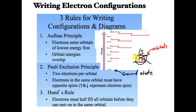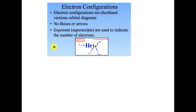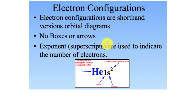What we're going to do is take those arrows and represent them with a number at the top — just a 2, for example — to represent the number of electrons. That's all we're going to do with electron configurations. Electron configurations are a shorter-hand version of orbital diagrams.